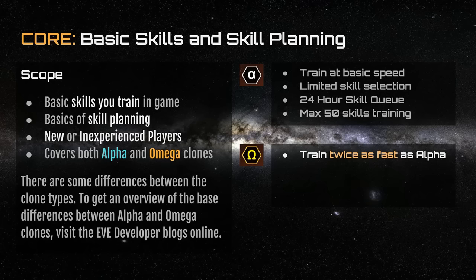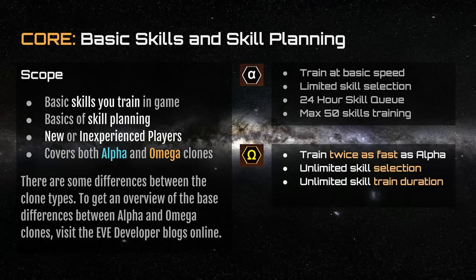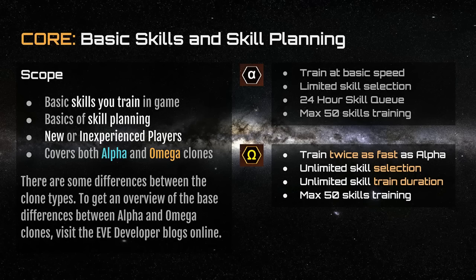You train twice as fast in the Omega state. So if you're currently subscribing to EVE Online — whether through Plex or another means — you train twice as fast. You also benefit from an unlimited skill selection and can access all modules in the game, provided you've trained for them. You gain an unlimited skill train duration as an Omega player, meaning your skill queue can run 200 days or more and will continue training while you're offline. Like Alpha clones, Omega clones are limited to 50 skills in their queue, but this is far less restrictive since those 50 skills can run for a very long time.